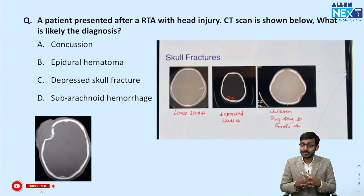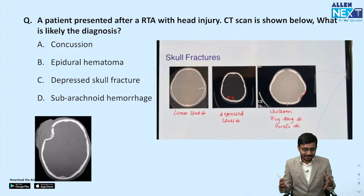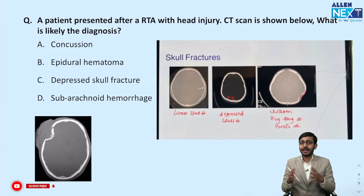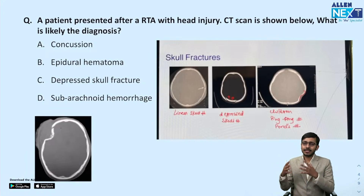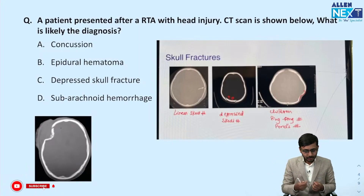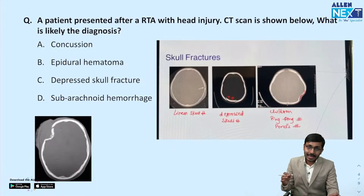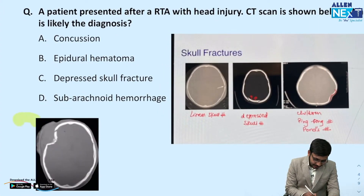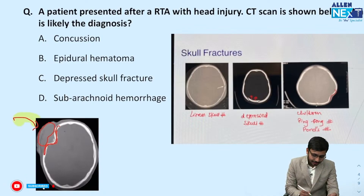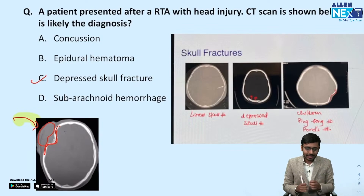Coming on to another CT of a head injury. Head injury is a favourite topic of examiners — be it NEET-PG, INICET, or now FMG — covering EDH, SDH, SAH, and skull fractures. This patient presented after a road traffic accident with a head injury. On the CT scan, in the right frontal region, we see a large scalp hematoma, and beneath that we see a fracture that is depressing the skull bones. The answer here is a depressed skull fracture.